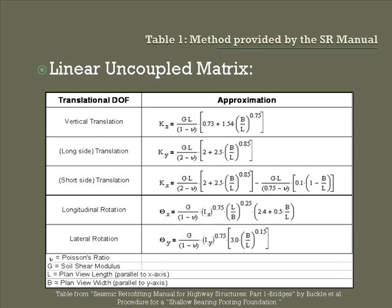The following is an example from an MSEER and Federal Highway Administration publication called the Seismic Retrofitting Manual for Highway Structures, Part 1 Bridges. This shows an example of a linear uncoupled matrix with all translational degrees of freedom, including longitudinal and lateral rotation. The approximate equations involve using Poisson's ratio, a soil shear modulus, and the plan-view length and plan-view width of the footing itself.